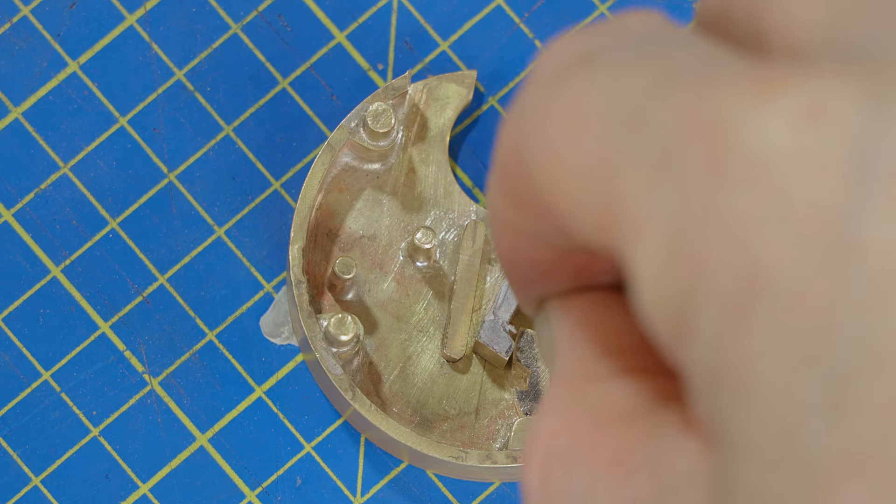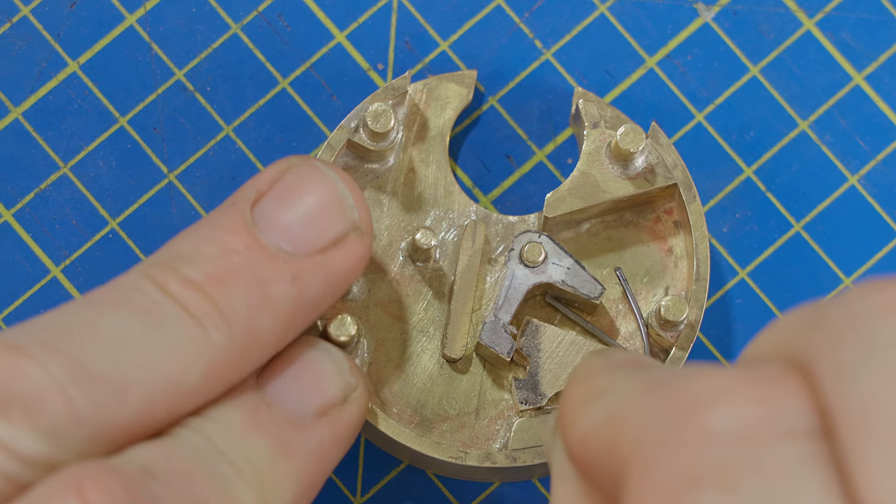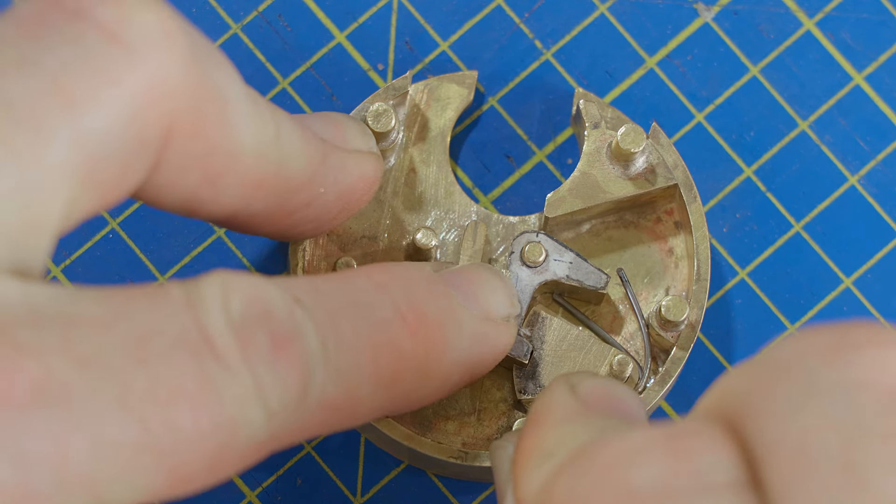The spring on the bottom lever pushes up against the underside of the bolt, and when all the gates are lined up the bolt gets forced into the gates.